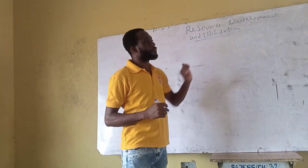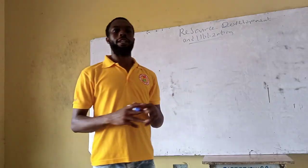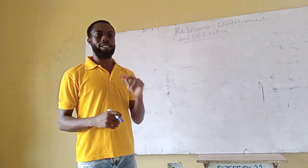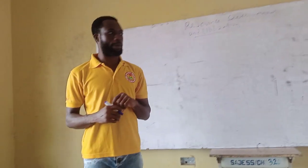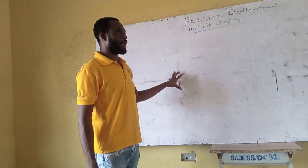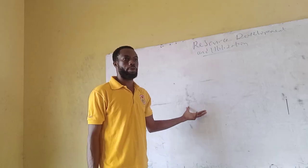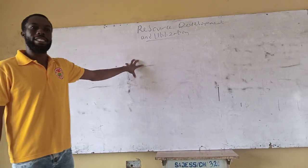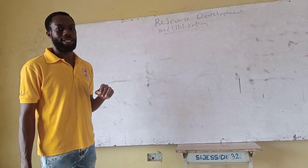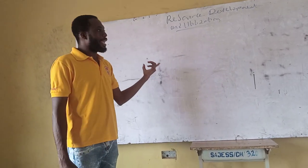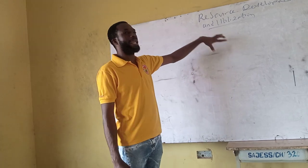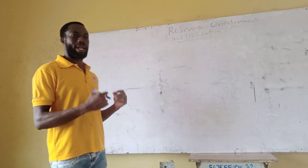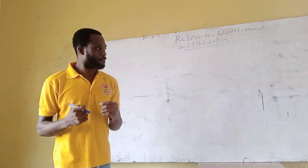Development, on the other hand, means the qualitative and the quantitative improvement in the standard of living of people. Take this board for example — when you want to improve it, you can go in for a smart board. The smart board replacing this one means there is a qualitative improvement. In the same way, when this board is replicated in all the classrooms, that also means development, because you have both the qualitative and the quantitative aspects of development.